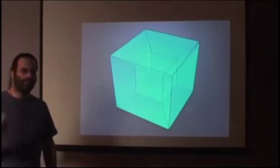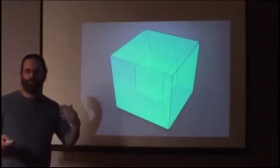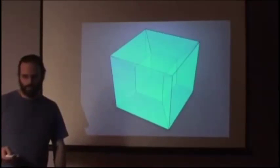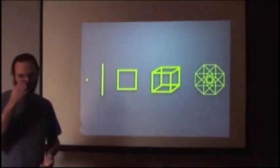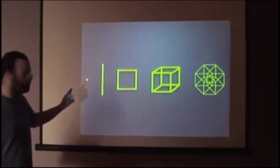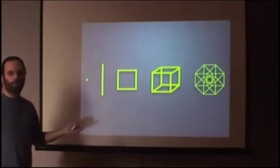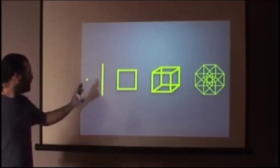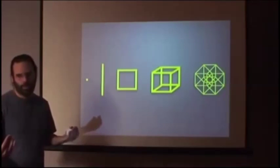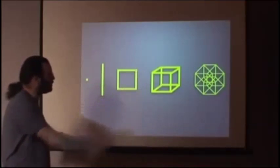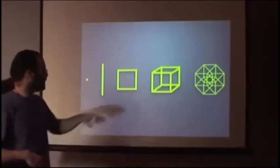The hypercube represents four-dimensional space and time, the next higher dimension from the three-dimensional world that we inhabit. You have a point that represents no dimension, a line that represents one dimension where you can go forward or backward, a plane created by extruding the line to get a two-dimensional object, then you extrude the plane into a third dimension and you get a cube. That's what our three-dimensional world is like.